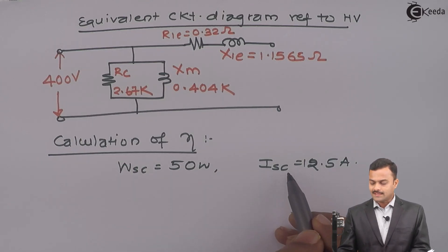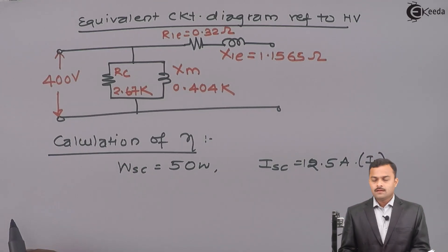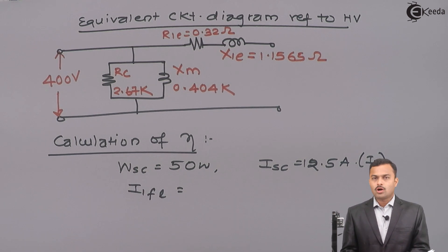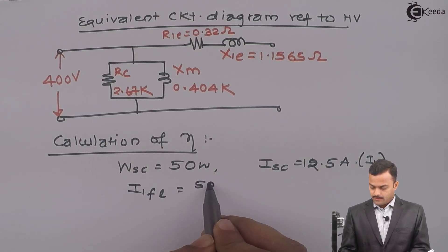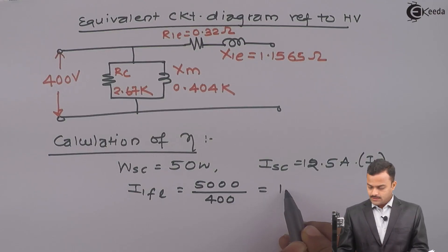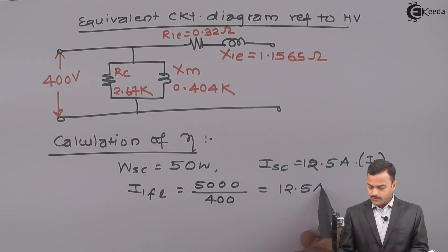So, I can say this current is I1. So, to get a full load copper loss I should know I1FL. So, how do you get I1FL? It is very simple. It is KVA 5000 divided by primary side voltage which is 400. So, if you solve you will get I1FL. So, I1FL is 12.5 ampere.